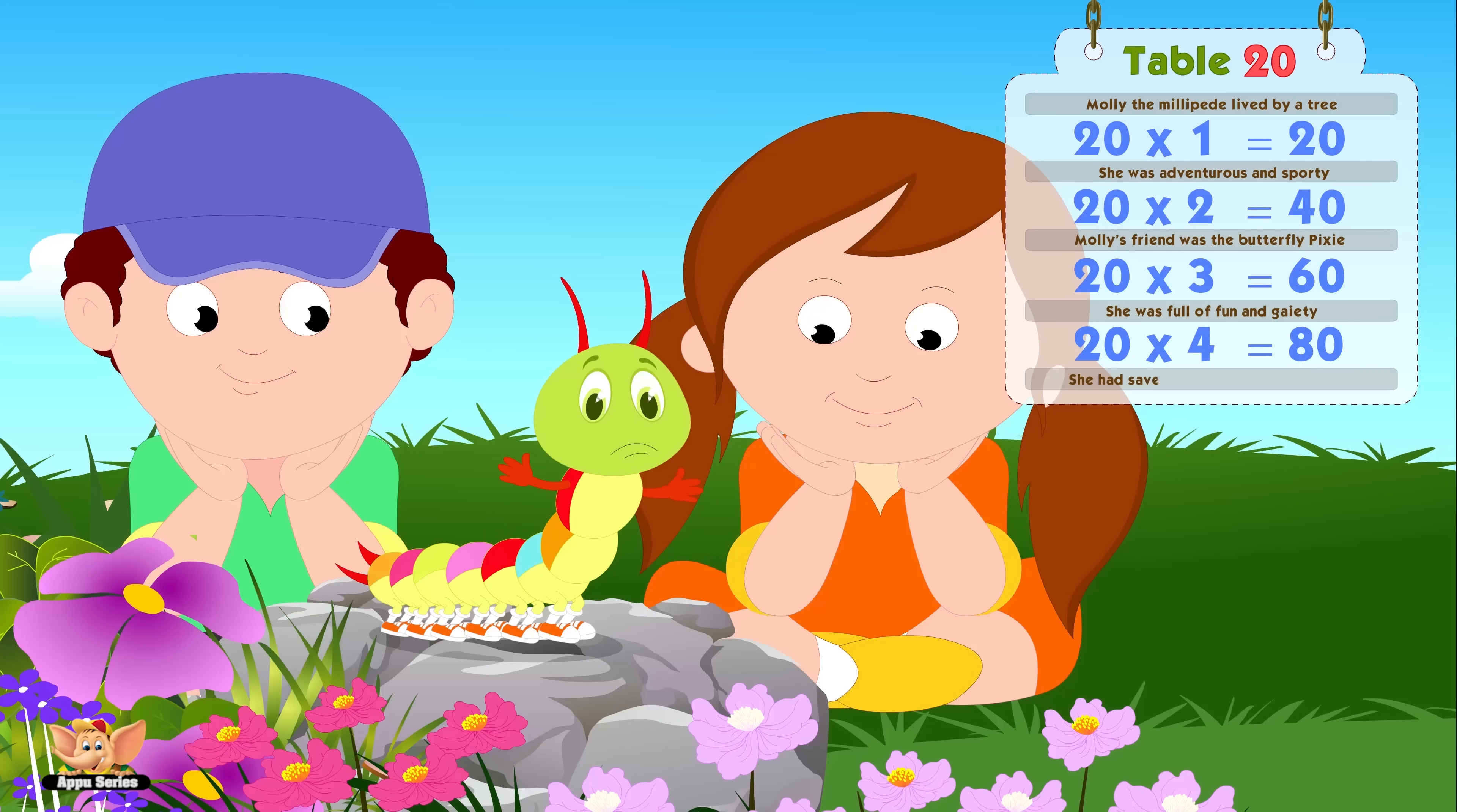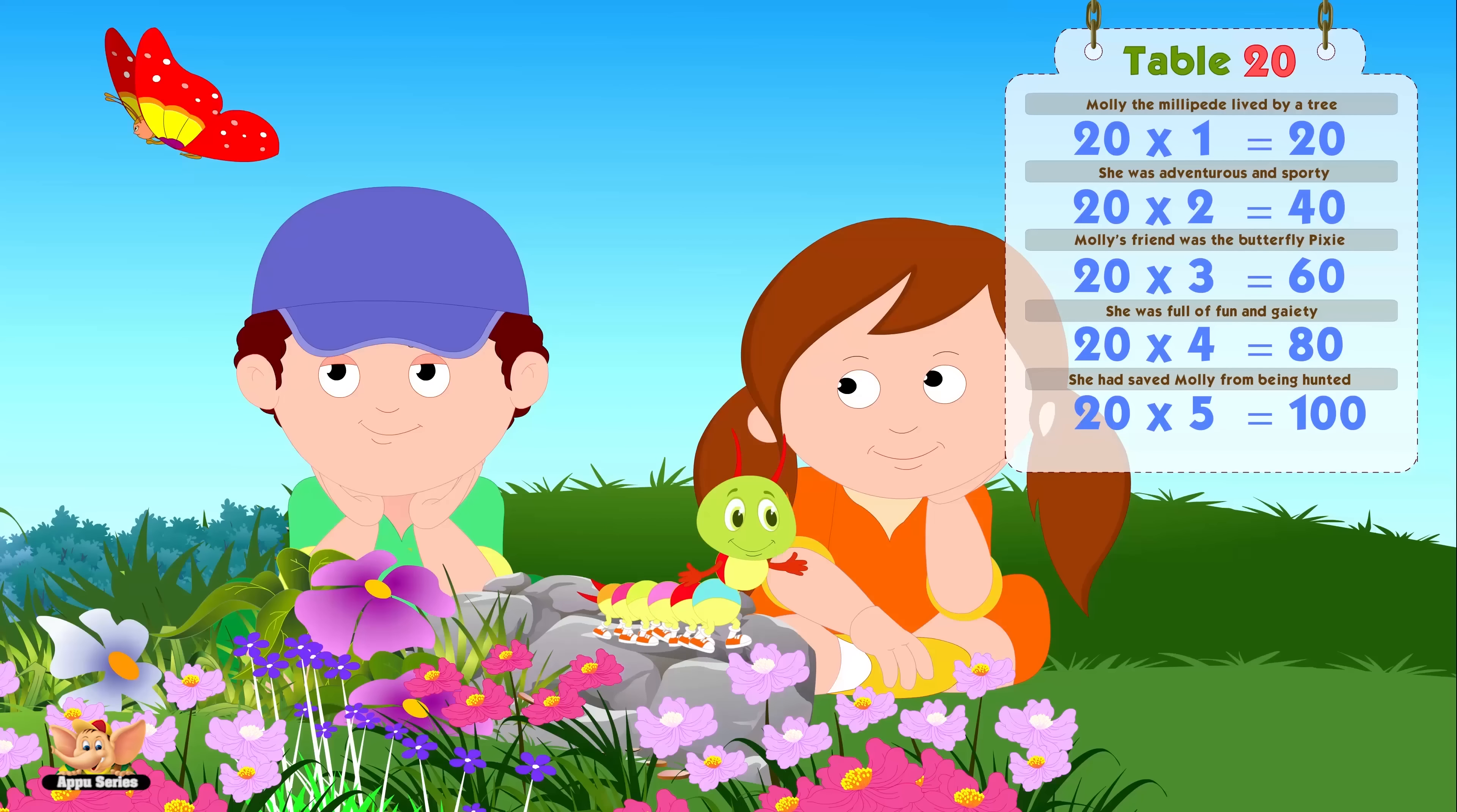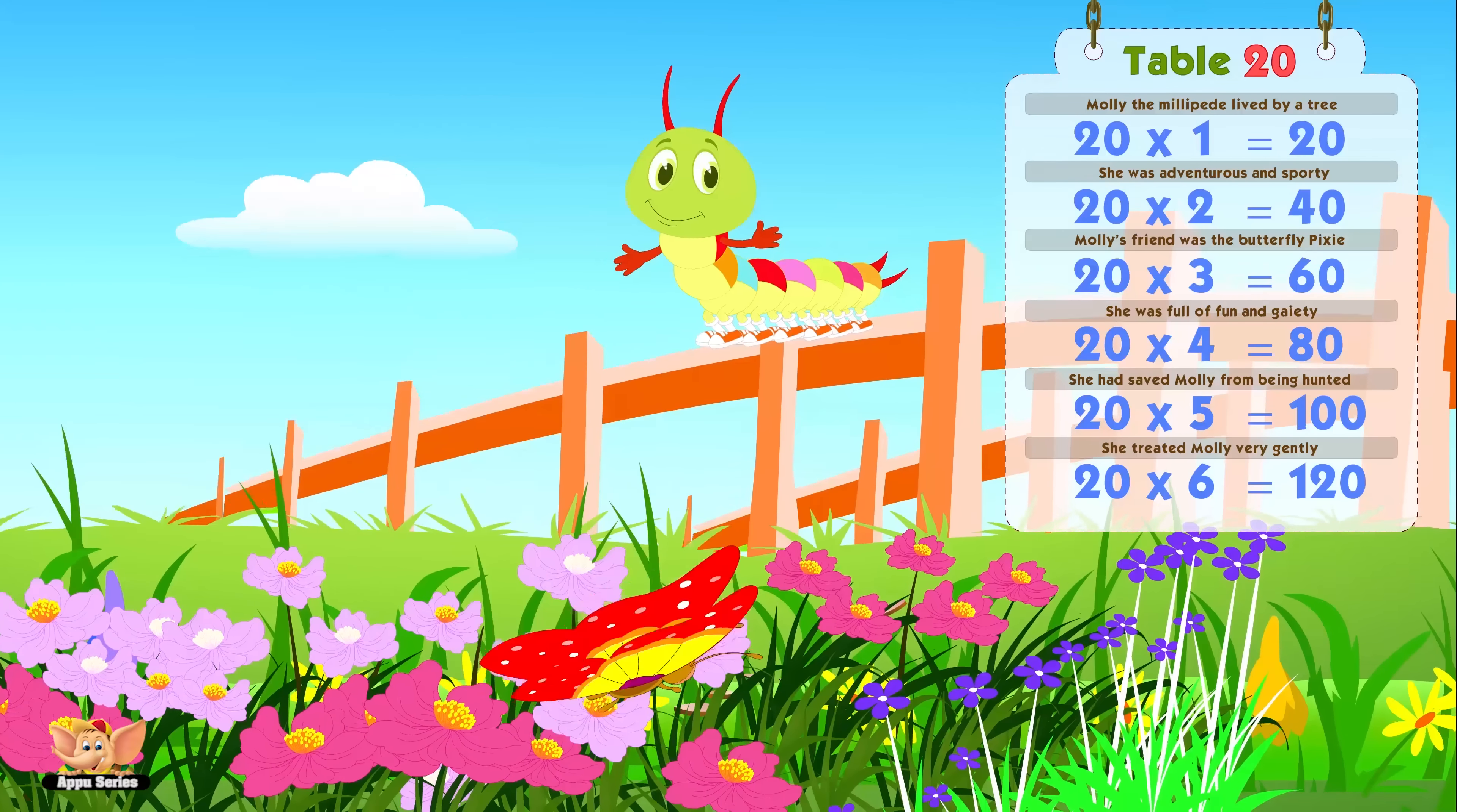She had saved Molly from being hunted. Twenty fives are one hundred. She treated Molly very gently. Twenty sixes are one twenty.